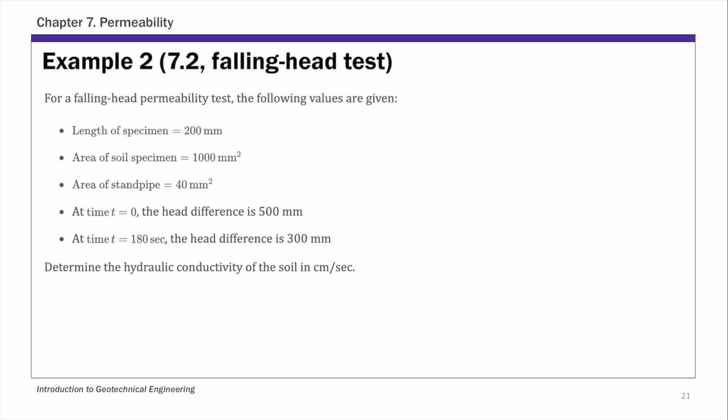This is example 2 of chapter 7, a falling head test. In this example, we are given the following values: the length of the specimen, that's L, and the area of the soil specimen, we call that capital A.